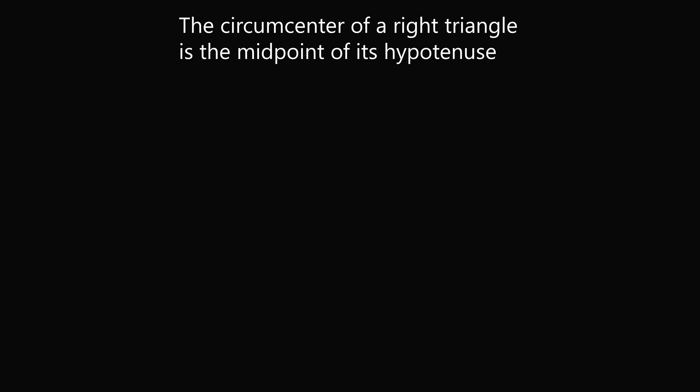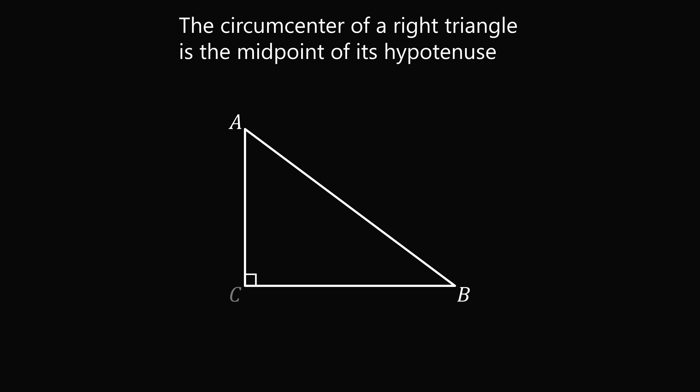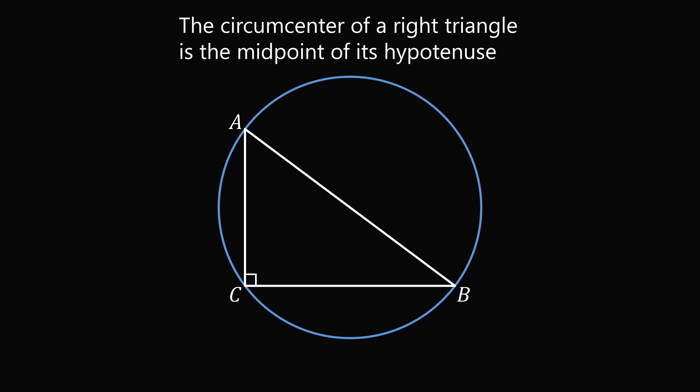We will show that the circumcenter of a right triangle is the midpoint of its hypotenuse. Let's say we have a right triangle with vertices A, B, and C. Let's say C is the right angle, so that AB is the hypotenuse. Now let's construct the circumcircle, which is the unique circle which passes through the points A, B, and C. Now let's say that O is the center of the circle. Whatever the location of O is, we know that the distance from O to the points A, B, and C has to be some fixed distance. If O is the center of the circle, then it's the same distance to all of the points on the circle — A, B, and C are on the circle. So we must have that OA is equal to OB is equal to OC. And we're going to show that O is exactly the midpoint of the hypotenuse AB.